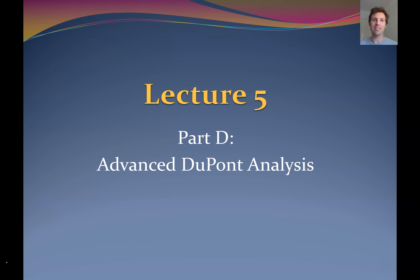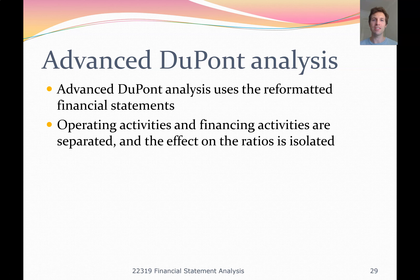Welcome to Lecture 5 of Financial Statement Analysis, Part B on Advanced DuPont Analysis. Advanced DuPont Analysis uses the reformatted financial statements — when we've reformatted our financial statements and split all our business activities into operating and financing activities, DuPont Analysis then allows us to have operating ratios and financing ratios. The effect of operating activities only influences our operating ratios, and financing activities only influence our financing ratios. It overcomes some of the problems identified in the traditional DuPont Analysis.